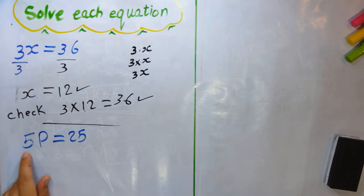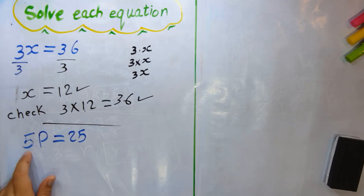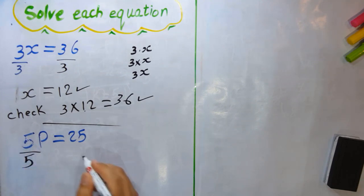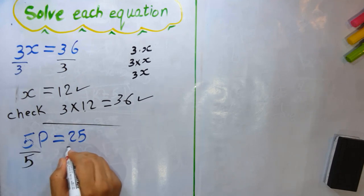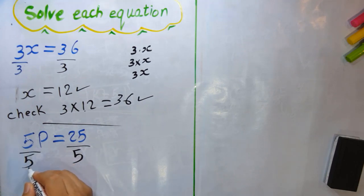We look at the operation between 5 and b — is it plus, minus, multiply, or divide? It's 5 multiplied by b. The opposite of multiply is divide, so we divide both sides by 5. Five divided by 5 is 1b.